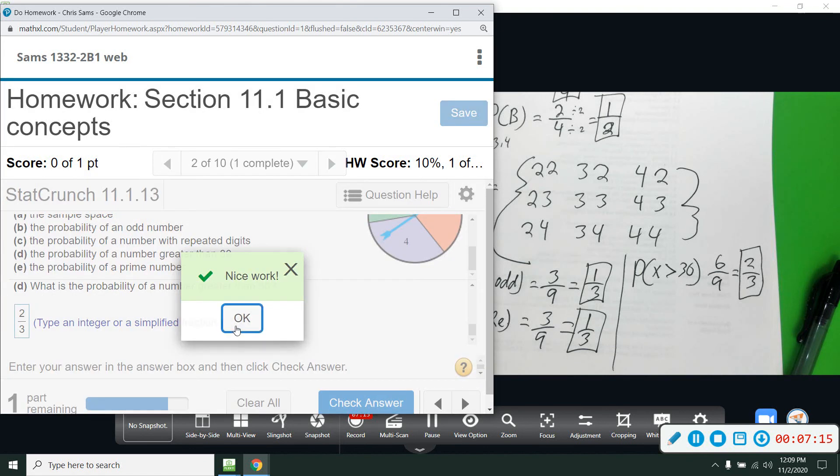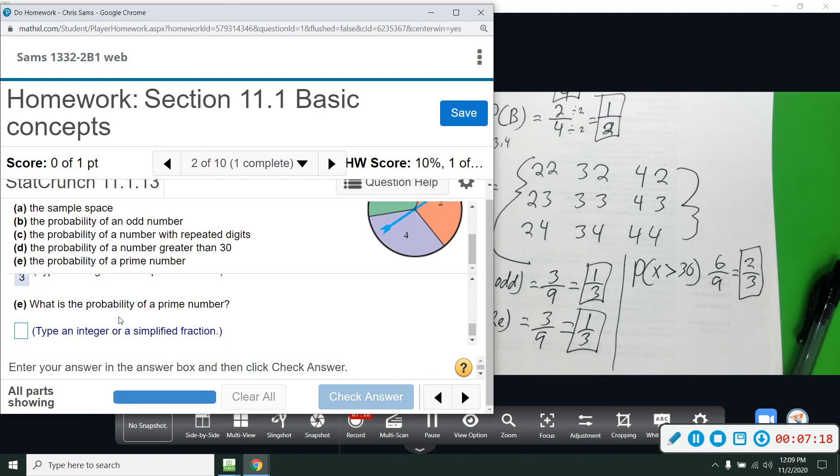All right, and we have one more part, probability of a prime number. So we've got to remember that prime numbers are numbers that are only divisible by 1 and itself. So any even number except for 2 is not going to be prime. Now these are candidates: 23, 33, and 43. 33 is divisible by 11, and 23 and 43 will be prime. They cannot be divided by anything except for 1 and itself.